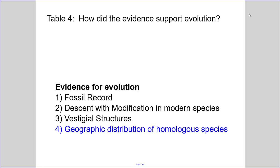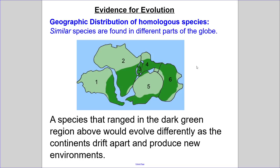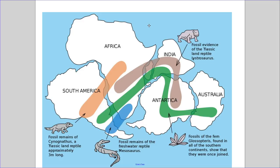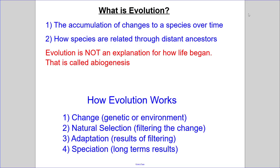The last station was the geographic distribution of homologous species. Similar species are found in different parts of the globe. A species that ranged across one region would evolve differently as the continents drifted apart and took on new environments, but they'd still look similar to their ancestral species. For example, birds with similar profiles and vestigial wings across different continents probably came from a common ancestor on the supercontinent, and as continents drifted, they evolved differently to deal with new habitats. Fossil remains of certain animals can be found on both South America and Africa, showing they once shared the same region.